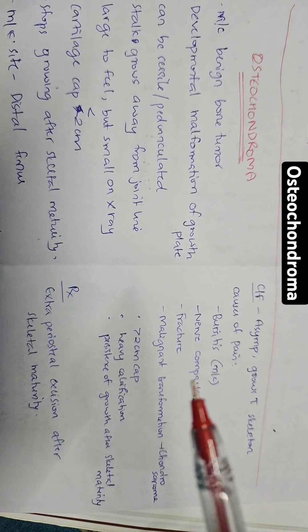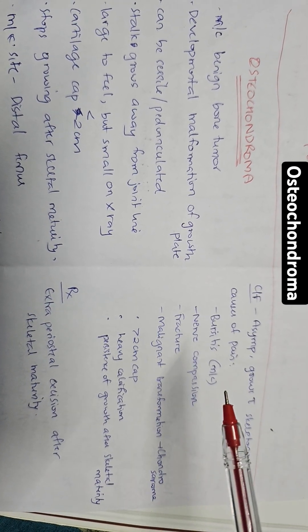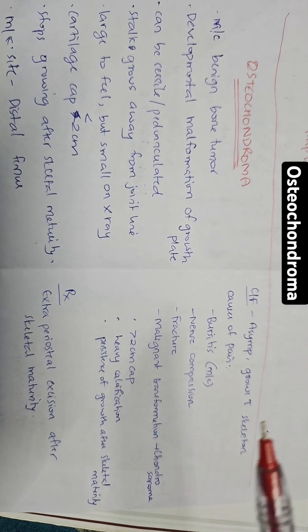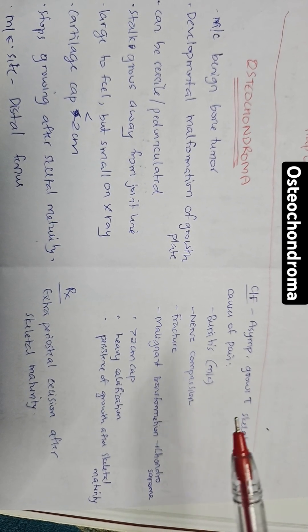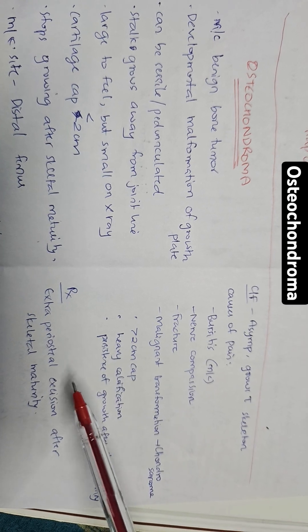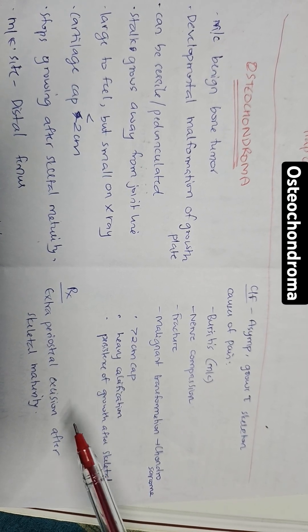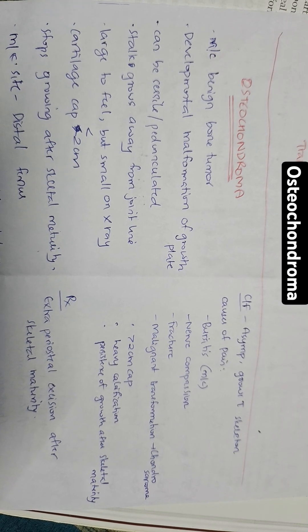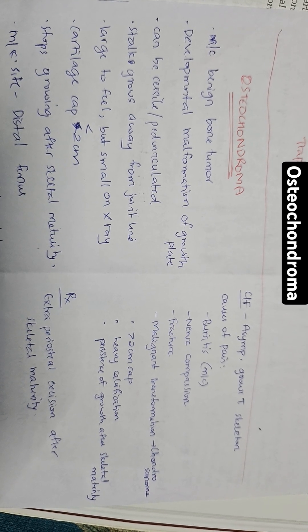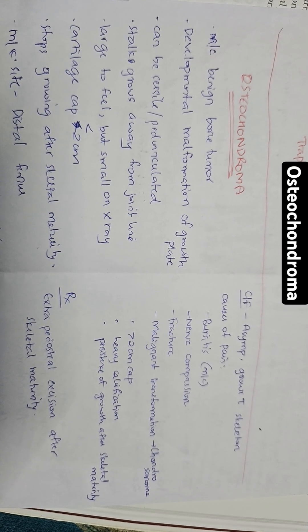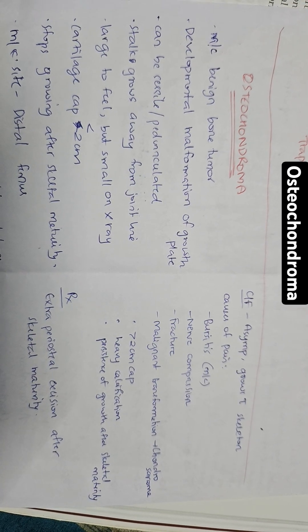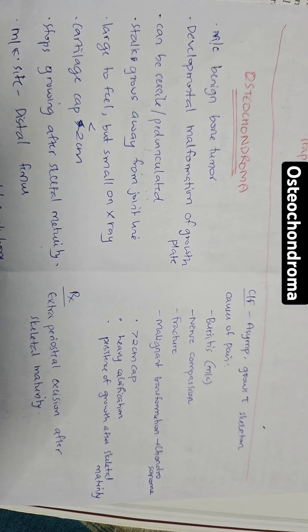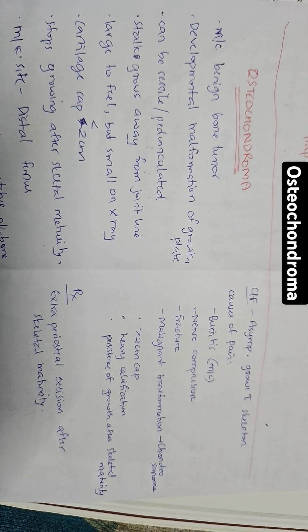How can you treat osteochondroma? We reassure the parents that it is a benign condition, and surgery is performed only after skeletal maturity is attained. The surgery is extra-periosteal excision — we remove the periosteum over the exostosis — because if we leave it, a few cartilage cells may remain behind and grow again, causing recurrence of the swelling. It is preferable to delay excision till skeletal maturity.